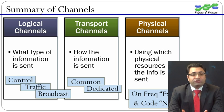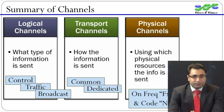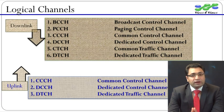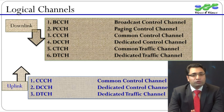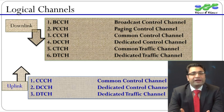The next slide shows a complete list of uplink and downlink logical channels in UMTS. As we can see, there are six downlink logical channels and three uplink logical channels. Broadcast control channel BCCH carries system information in downlink, and paging control channel PCCH carries paging messages for incoming calls or incoming SMS.